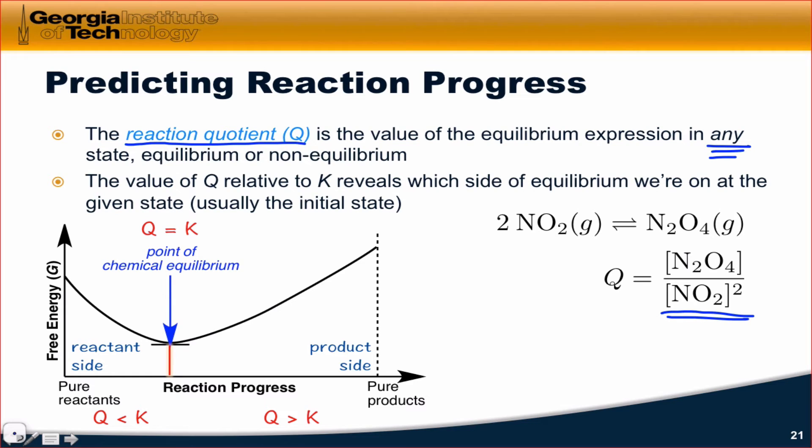The beautiful thing about Q is that its value relative to K tells us which side of the equilibrium we're on at a particular state, which is usually the initial state that we're interested in.